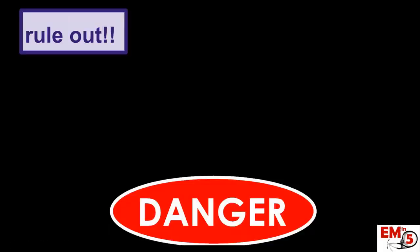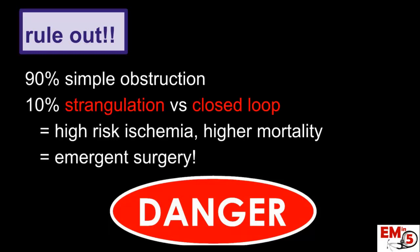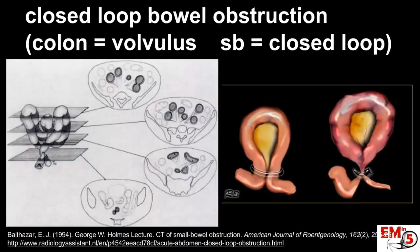Now that we have concerns for an SBO, there are a couple of other signs we need to look for that can be very dangerous. About 90% of SBOs are simple obstructions that go on to conservative management without surgery. But we need to look for signs of ischemia based on strangulation or a closed loop obstruction, because this can require emergent surgery. A closed loop bowel obstruction is the equivalent of a volvulus of the colon — it can get twisted or go through an internal hernia, like through the mesentery, and cause strangulation.